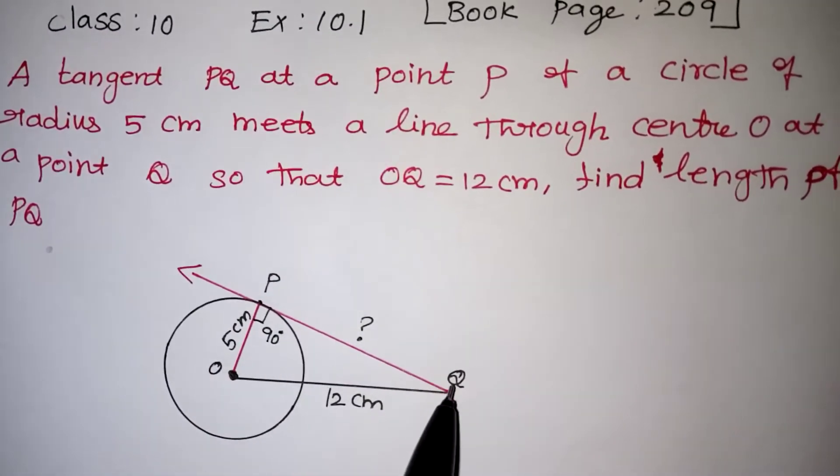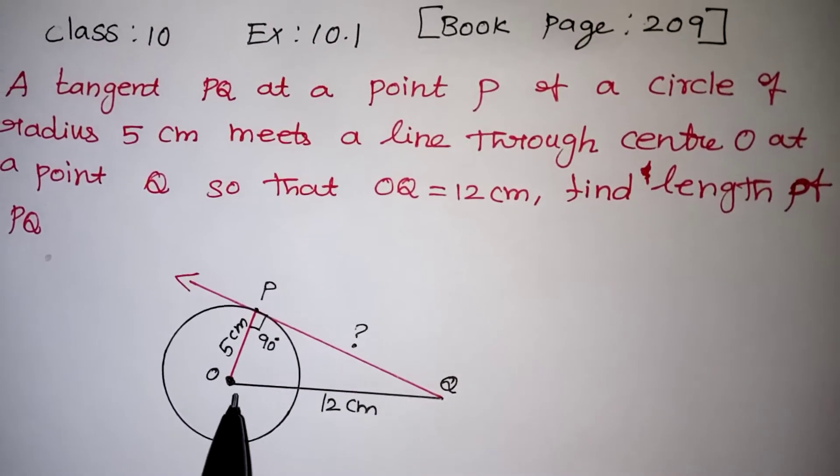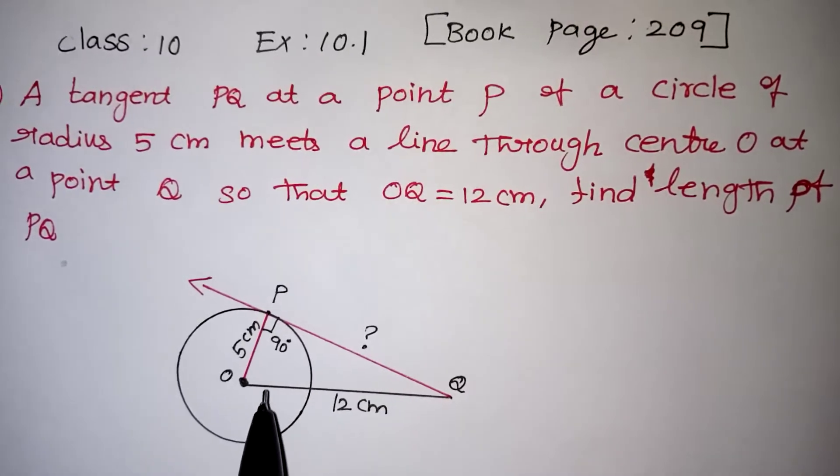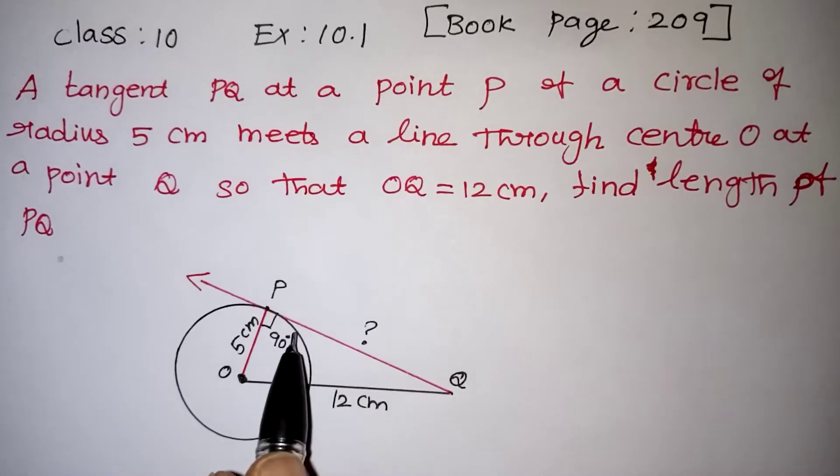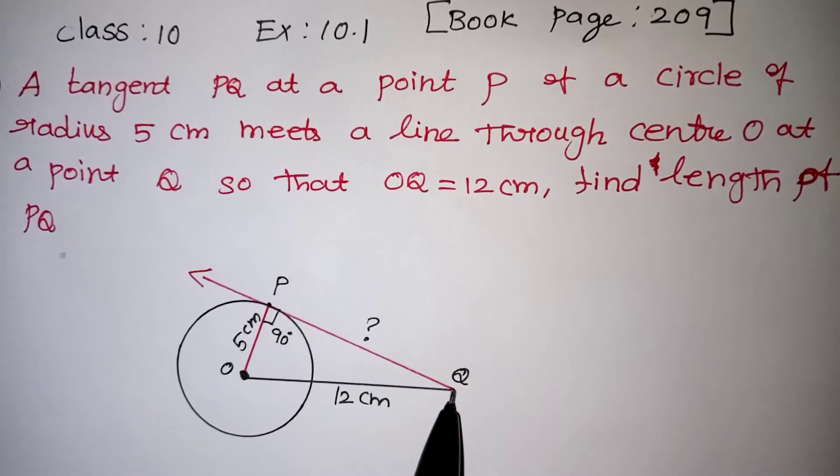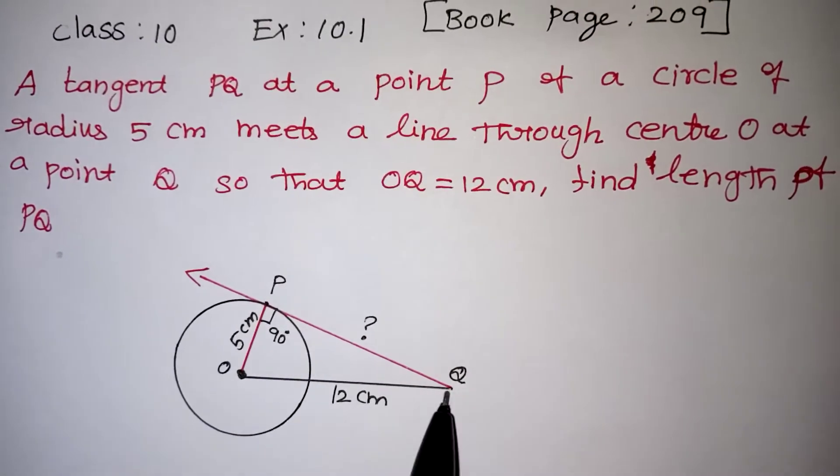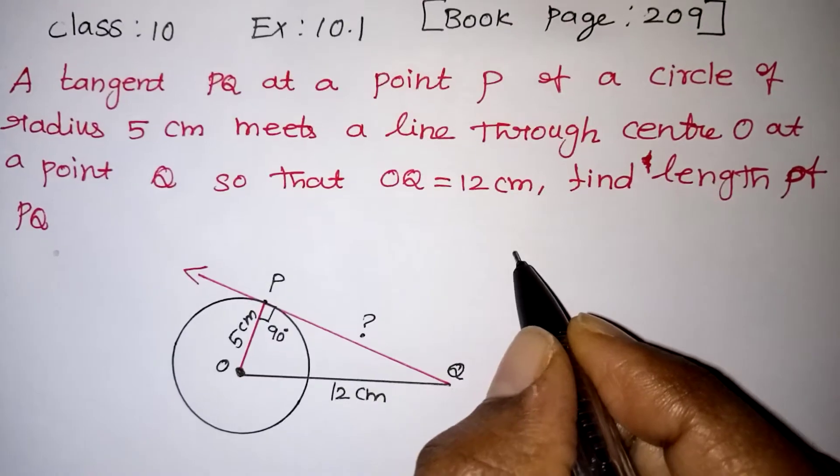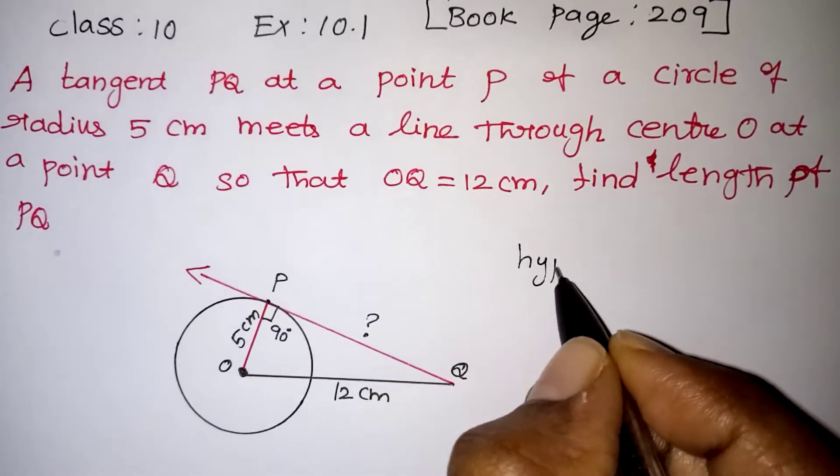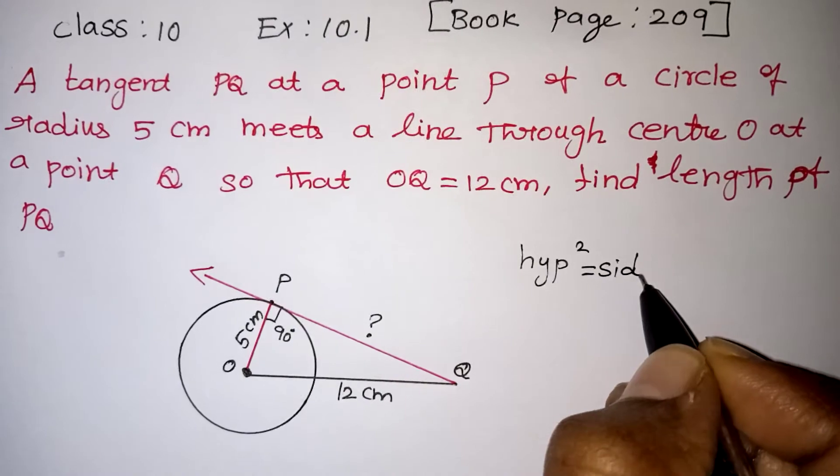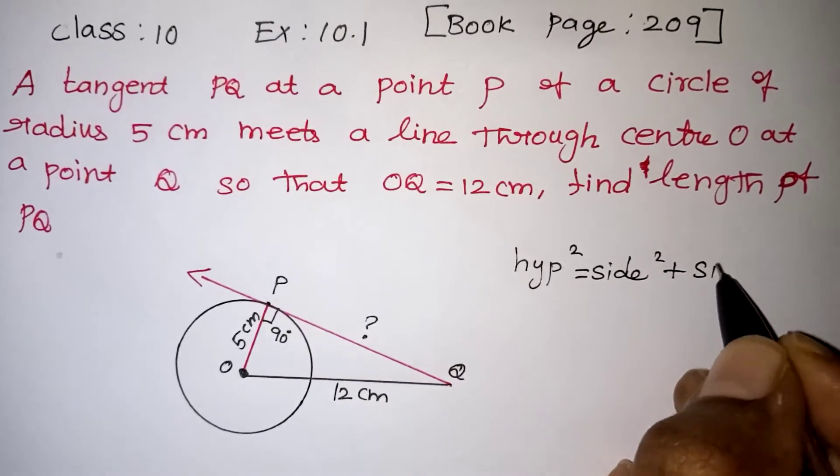In this right angle triangle we are going to apply the Pythagoras theorem. Now here which is the hypotenuse side we should find out. The line which comes opposite to the 90 degree is called hypotenuse. So OQ is the hypotenuse. By Pythagoras theorem we can say that hypotenuse squared equals side squared plus side squared.